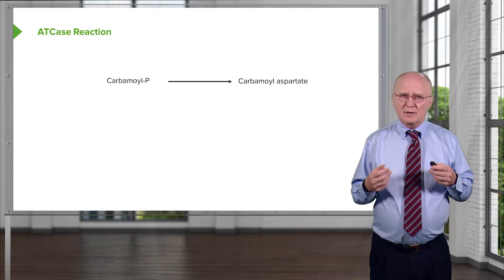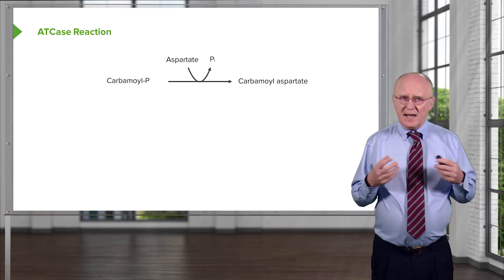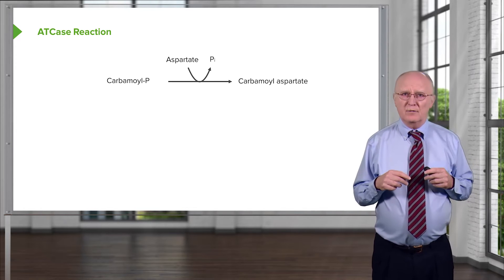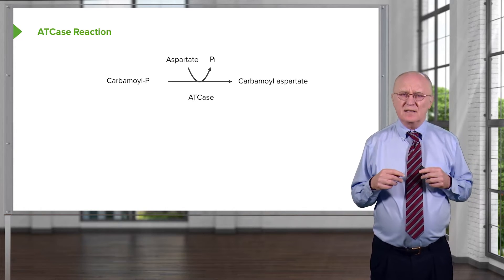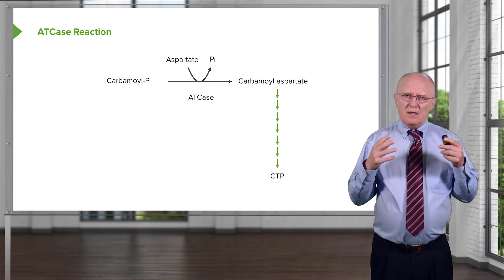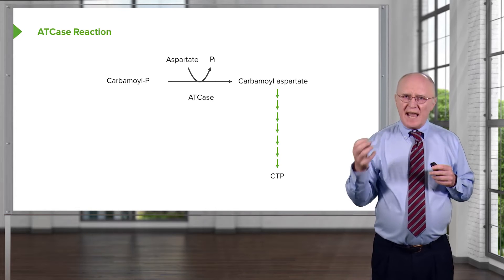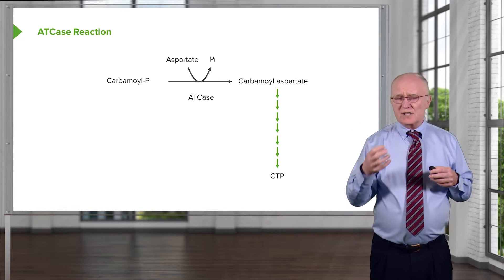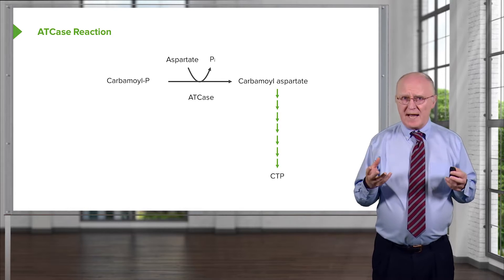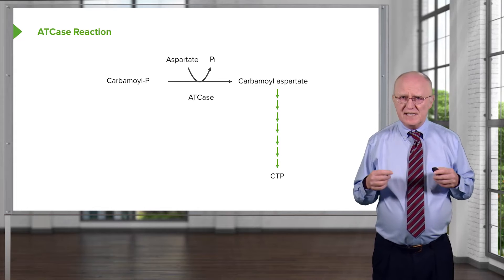ATCase catalyzes the following reaction: carbamoyl phosphate is converted into carbamoyl aspartate, and that happens by adding an aspartate to the first molecule, carbamoyl phosphate. That is the second reaction in the process. There are a series of reactions that happen, converting carbamoyl aspartate into one molecule, into another, and so on. There are six reactions to get to UMP and about ten reactions to get down to the final product, which is CTP.